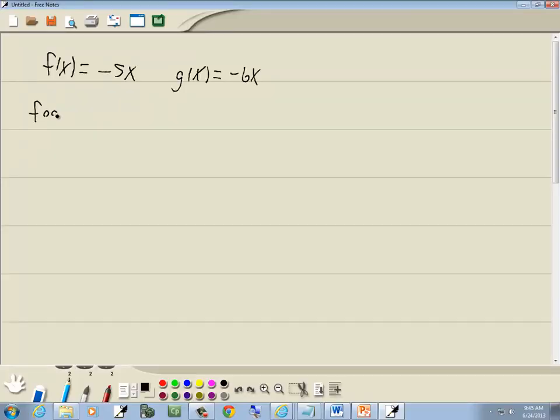We want to find a composition going both ways, a composition of f and g and a composition of g and f. A composition of f and g is f of g, so we're going to take our f of x, and where x is, we'll put it in parentheses. Whatever's inside the parentheses here is automatically, we'll plug in where the x was.